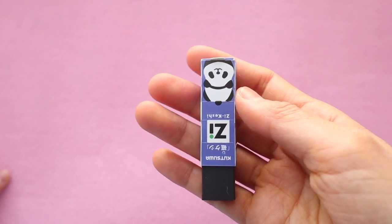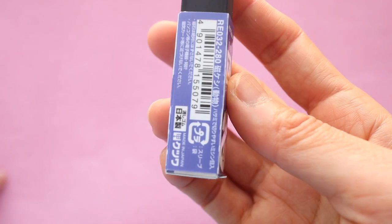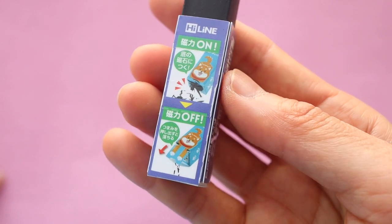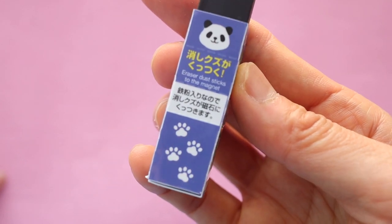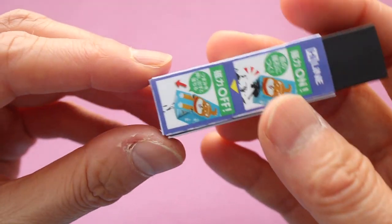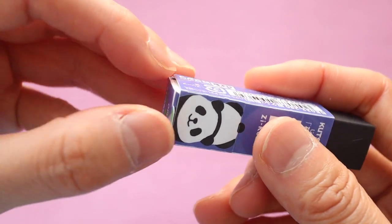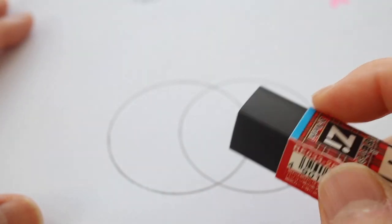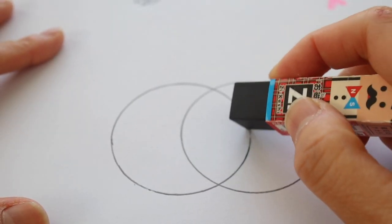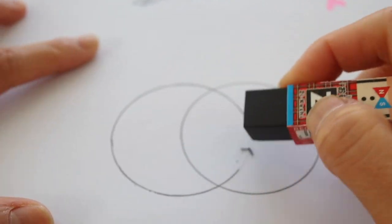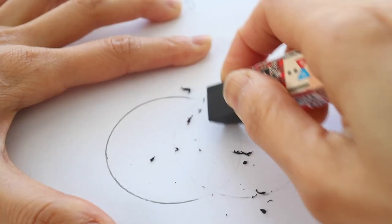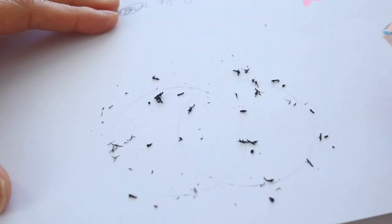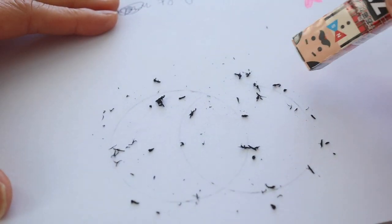The next one is this cute little panda eraser. This one was from a series of different animals. Again, it was like a blind eraser. I didn't get to pick it. I think they also had like a penguin and a dog and a cat. It has a similar setup as the old man eraser. Let me show you guys how this works.